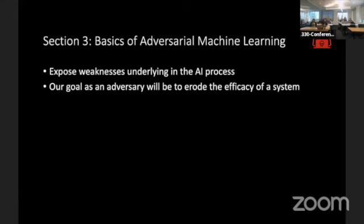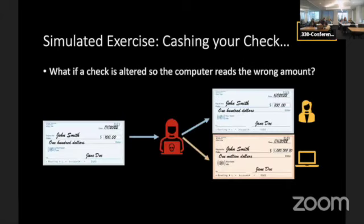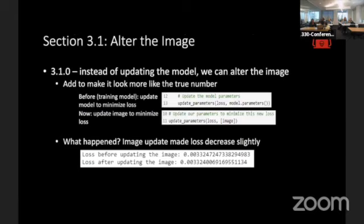We've already started to look at that. We're exposing some weaknesses in that underlying AI process. We're going to try to erode the efficacy and just break it. Back to that example. What if the check is altered in a way so the computer reads it wrong, but humans can't detect it? So it looks like the normal number, but the algorithm itself underlying is reading it wrong. We actually will alter the image itself to make it look more like a number that we want it to be. Before we were updating the model to minimize the loss. We were updating the inner layers. Now, we're actually going to update the image itself. Because as an adversary, that's what we have control over. We can't assume that we have direct access to the model. We just have what we're going to give to it.